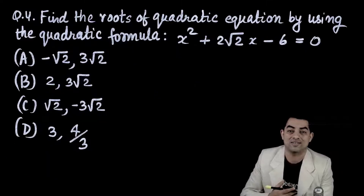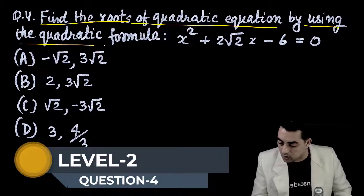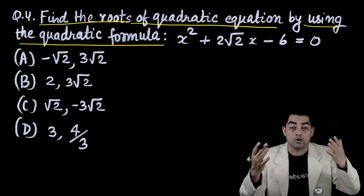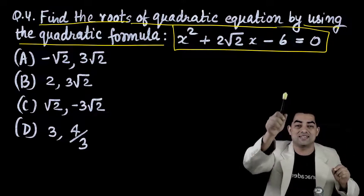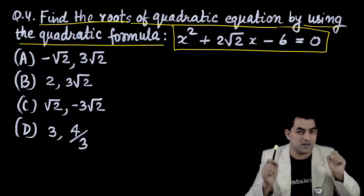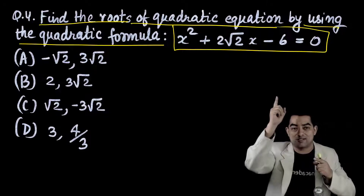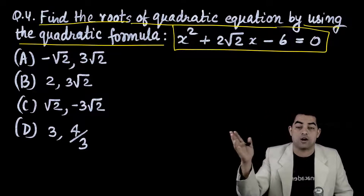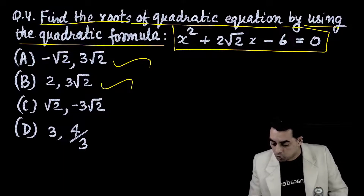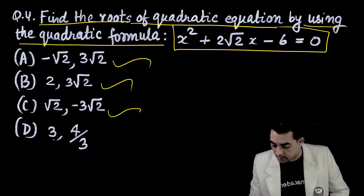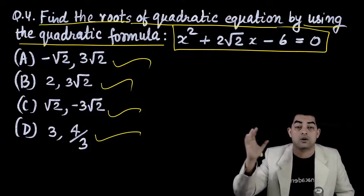Question number 4: find the roots of the quadratic equation x² + 2√2x - 6 = 0 using the quadratic formula. Options: (a) -√2, 3√2; (b) 2, 3√2; (c) √2, -3√2; (d) 3, 4√3. Don't be scared of roots in the equation — let's solve it.